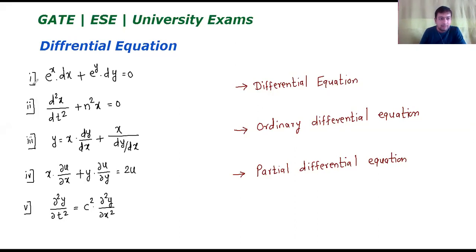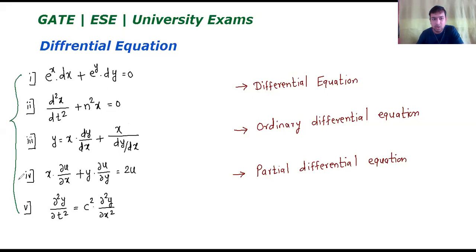I have 5 equations here. The first equation is e to the power x dx plus e to the power y dy equal to 0. The second is d squared x upon dt squared plus n squared x equal to 0. Now if you observe equations 1 to 5, in each equation you will notice they consist of some differential coefficients. The equations which involve differential coefficients are called differential equations.